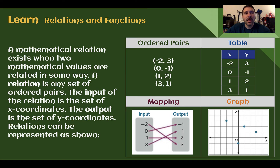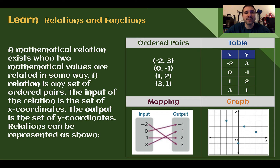Relations and functions. A mathematical relation exists when two mathematical values are related in some way — usually we see it with X and Y. A relation is any set of ordered pairs. We're very familiar with seeing them as coordinate points. The input is the X coordinates, while the output is the Y coordinates. Relations can be shown in any of the four ways seen here.